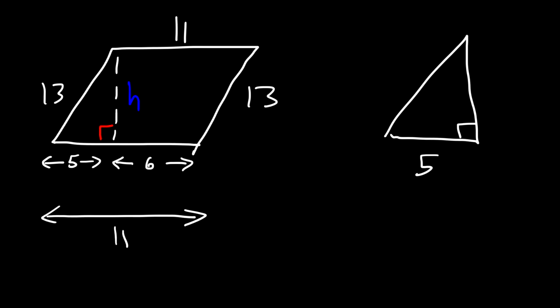This side is 5, this side is 13. We need to find the missing side. So we can use the Pythagorean theorem: A squared plus B squared equals C squared. Let's say A is 5, B is the height, and C is 13.